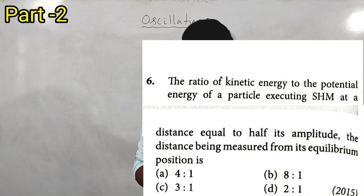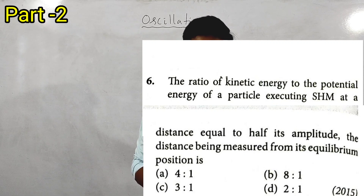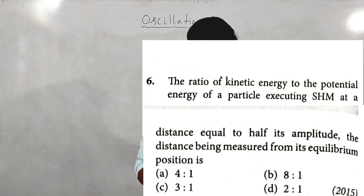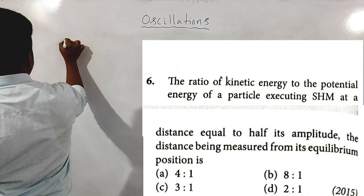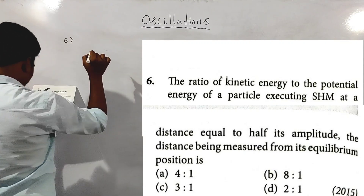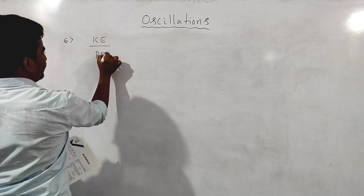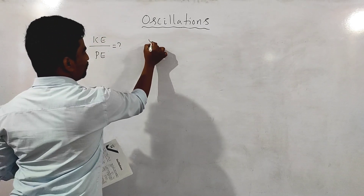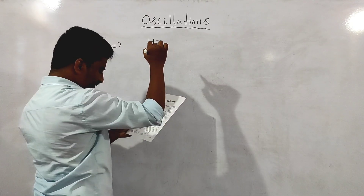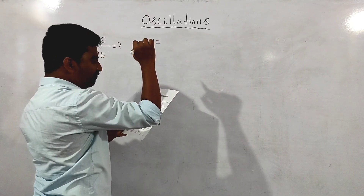The ratio of kinetic energy to the potential energy of a particle executing SHM at a distance equal to half of its amplitude. The distance being measured from its equilibrium position. The ratio of kinetic energy to the potential energy at a distance y equal to half of its amplitude.